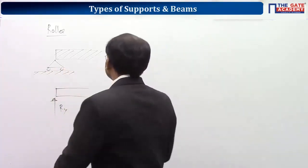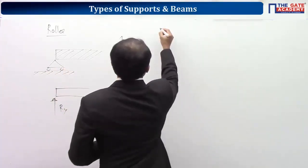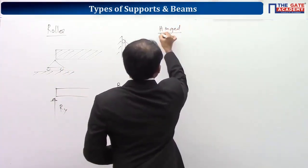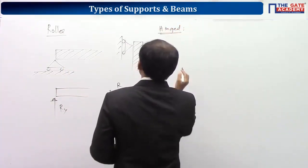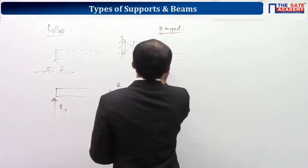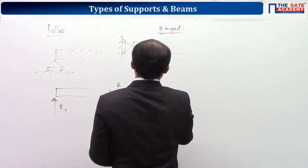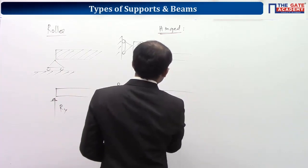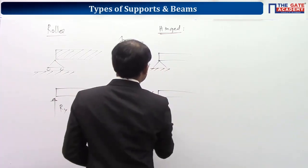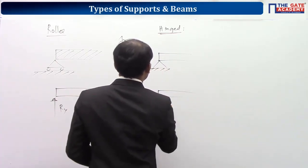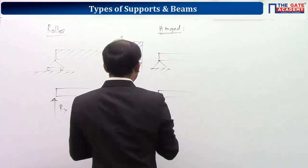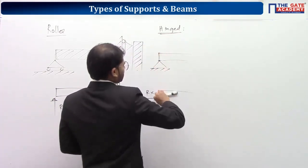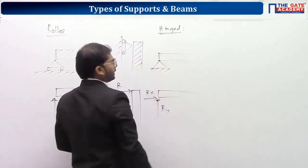For a hinged or pin support, the beam is restricted from moving in both the x and y directions. So in the free body diagram, you will have both Rx and Ry. However, the member is still free to rotate about the support point, so there will be no reaction moment.